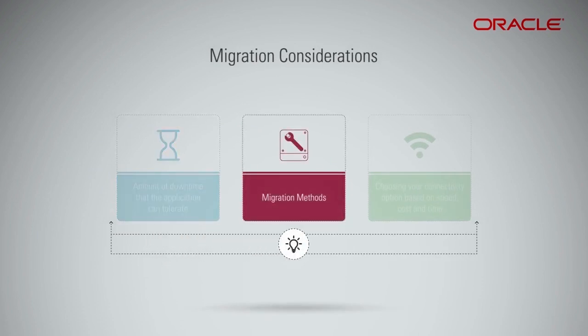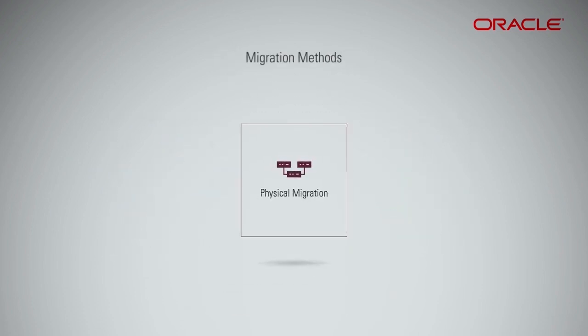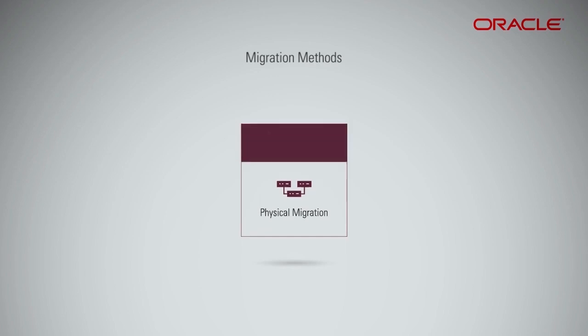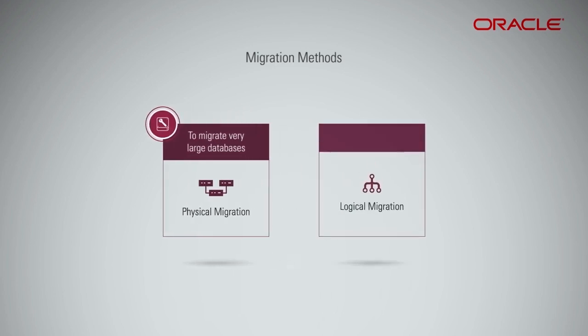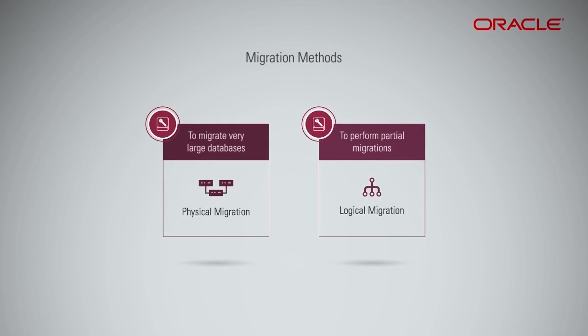Migration methods is another factor to consider. Several tools are available for migrating from AWS to Oracle Cloud Infrastructure. When you migrate very large databases, it's often beneficial to perform a physical migration because you don't have to rebuild the indexes, gather statistics, and so on after the migration. If you want to perform partial migrations, logical migrations are preferred. You may want to change the database layout, change character sets, change block sizes, or defragment the database.